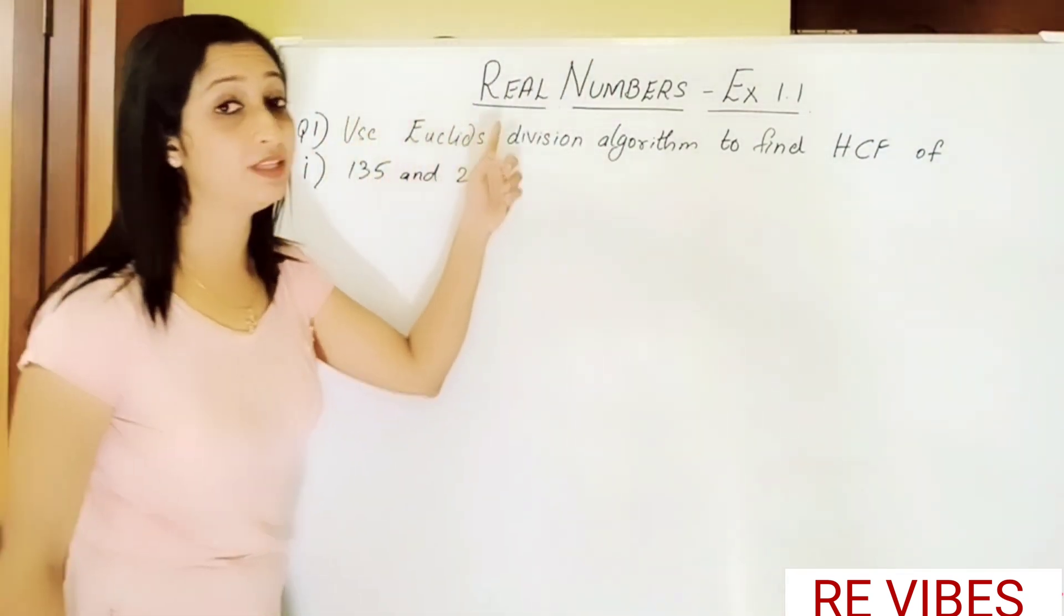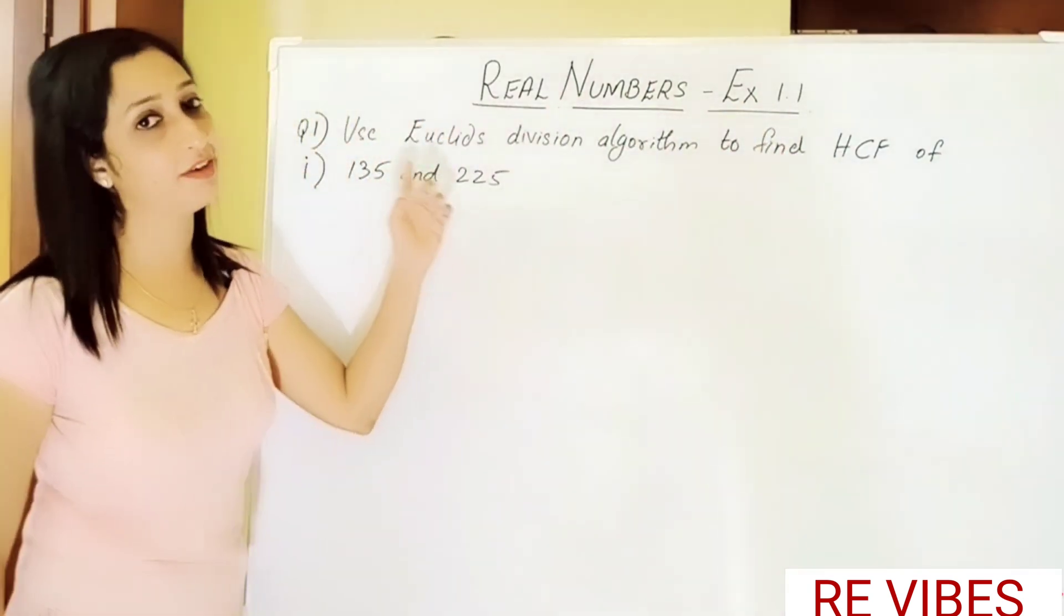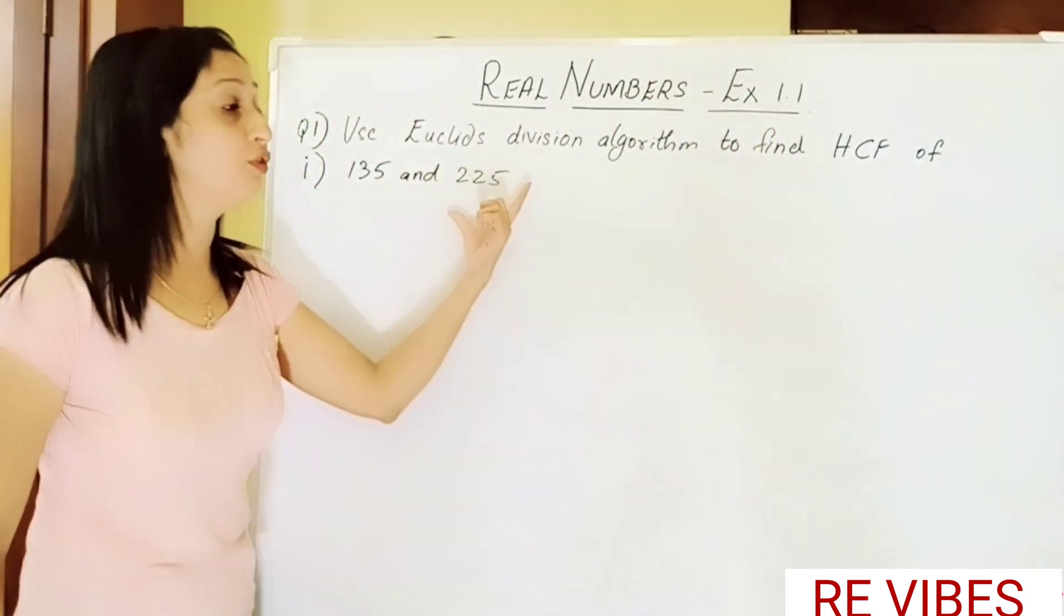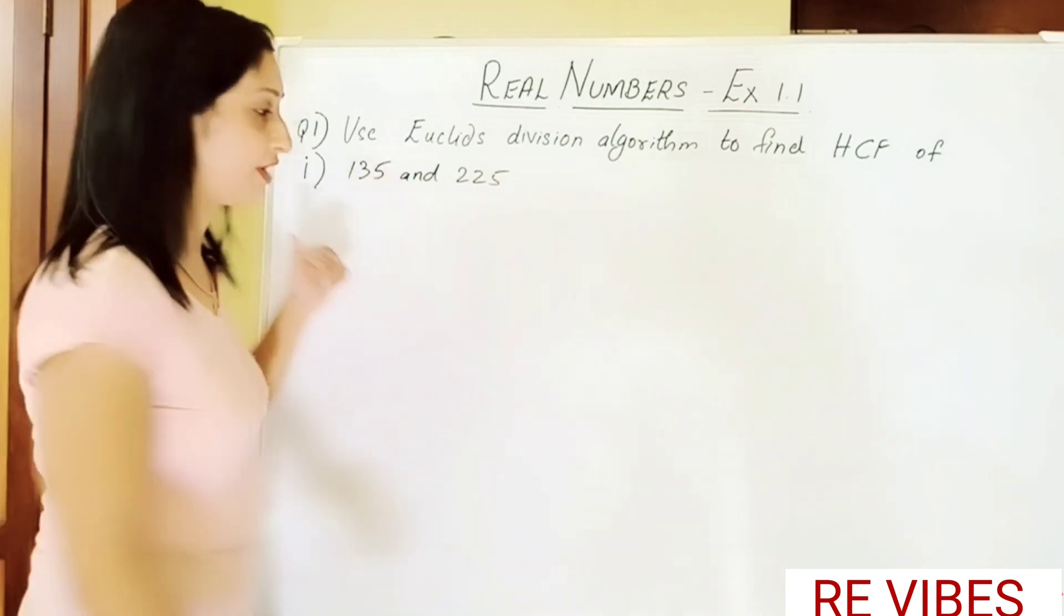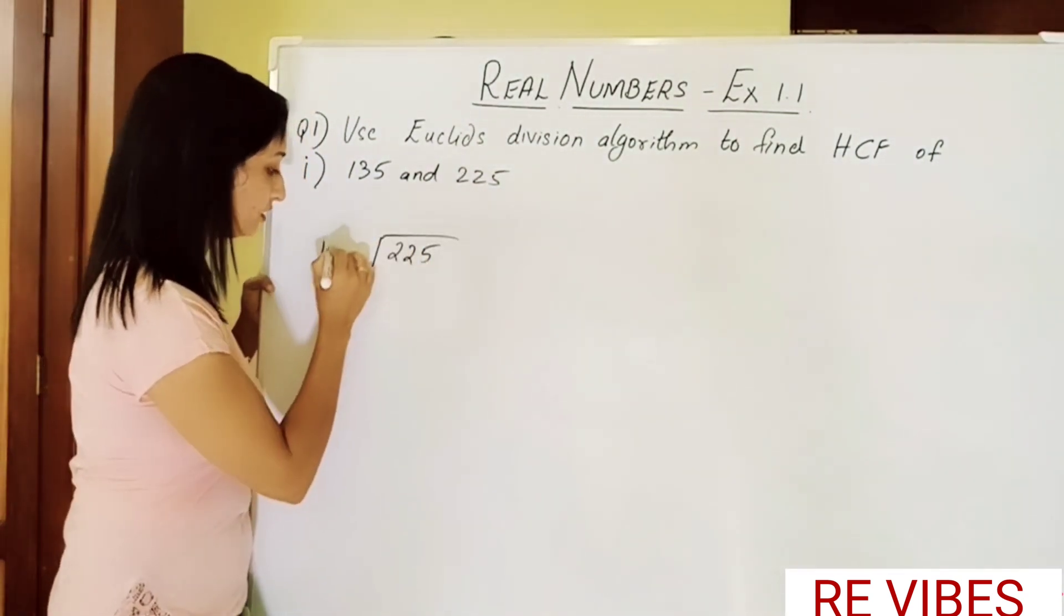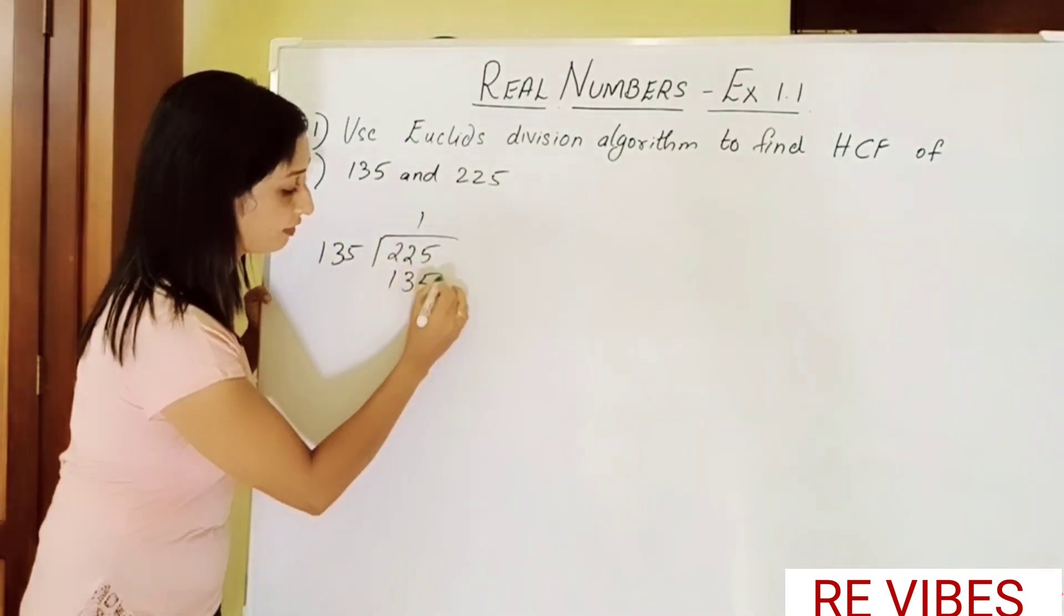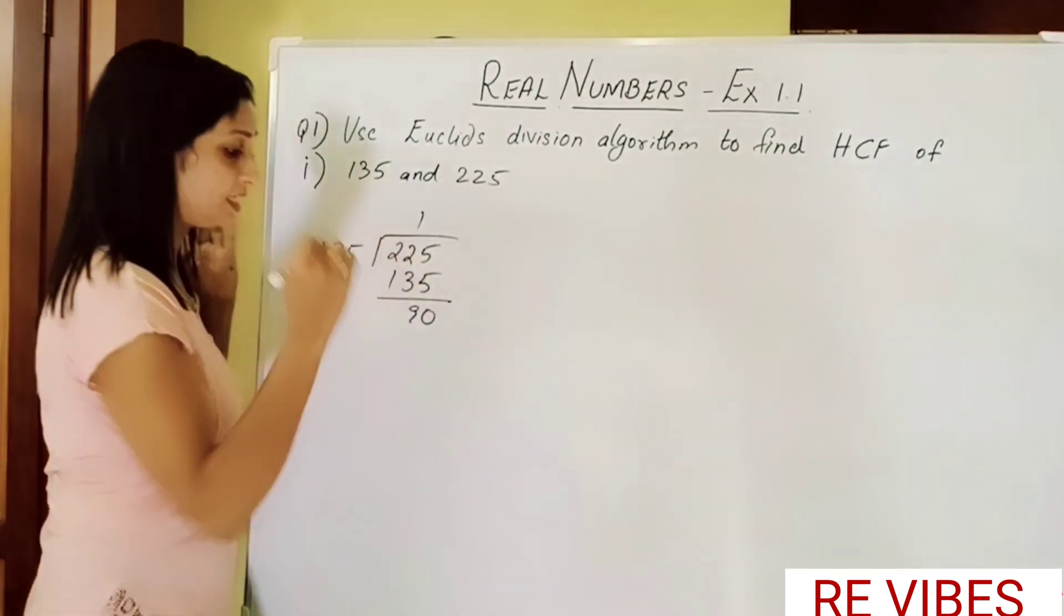Question 1 is: use Euclid's division algorithm to find the HCF of 135 and 225. Now here, which is a greater number? 225. So we start dividing 225 by 135. 135 ones are 135, we get the remainder 90 which is not zero, so we need to perform the division again where 135 becomes a dividend and 90 becomes a divisor.